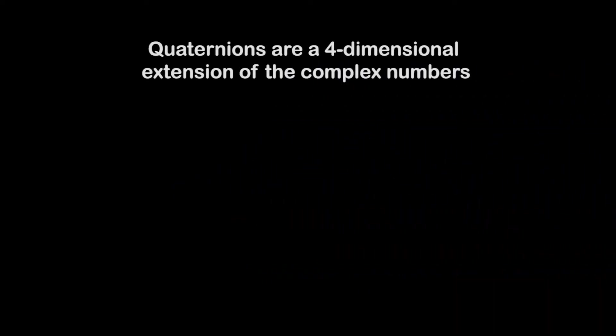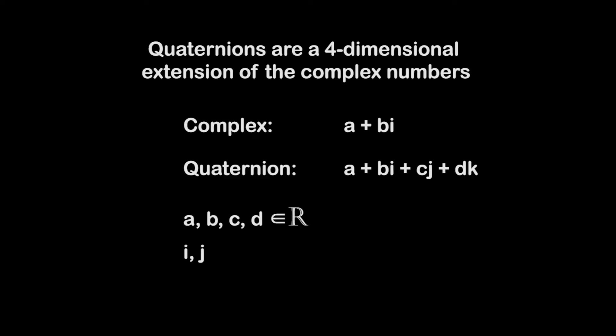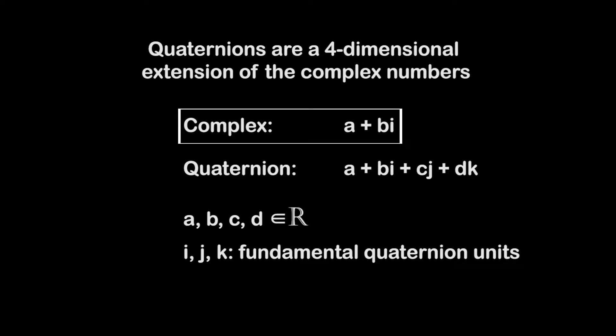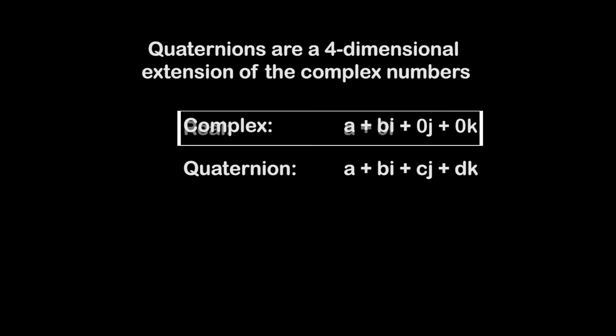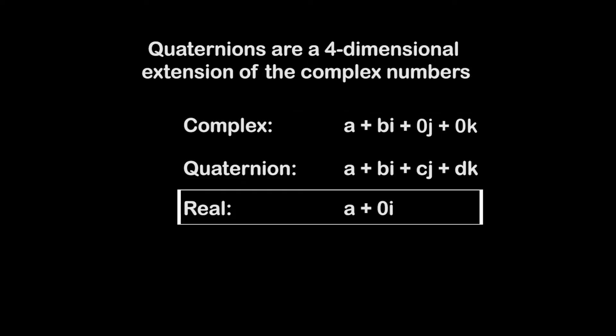Sure. Quaternions are a four-dimensional extension of the complex numbers. Complex numbers are of the form A plus B I. Quaternions are of the form A plus B I plus C J plus D K, where A, B, C, D are real numbers, and I, J, and K are the fundamental quaternion units. So complex numbers can be thought of quaternions which have C and D equal to zero, just like real numbers can be thought of complex numbers with B equal to zero.